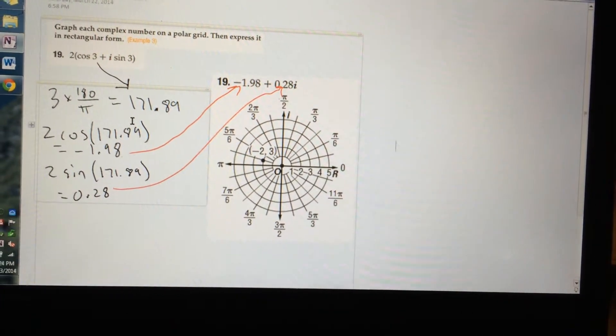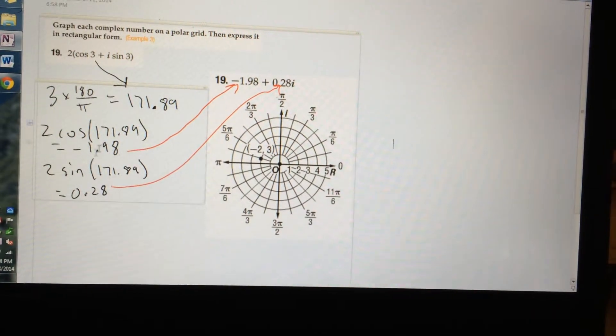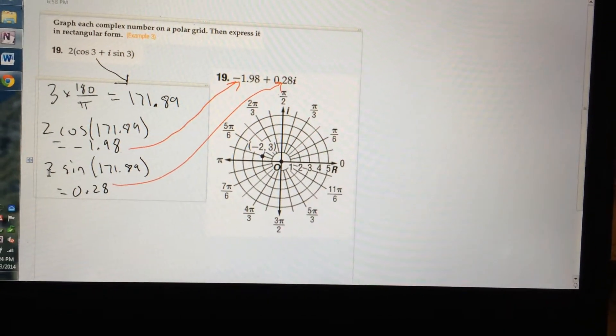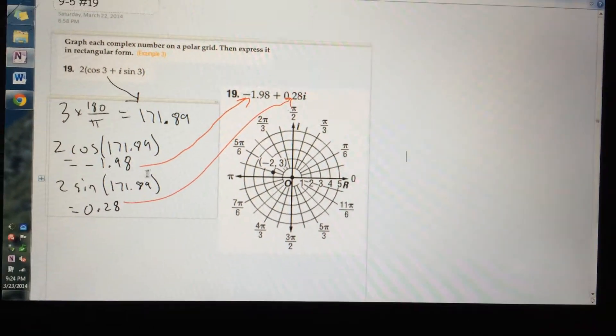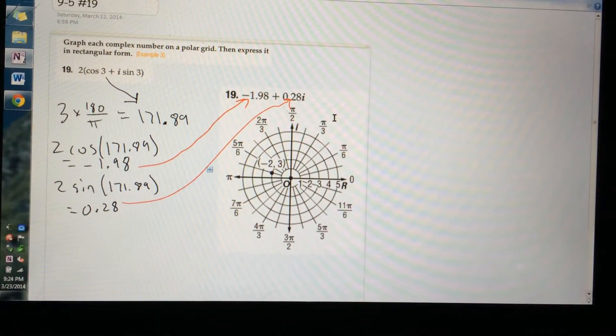And then the second part, the imaginary number, is 2 sine of 171.89, which is 0.28. And that's how you get the second number.